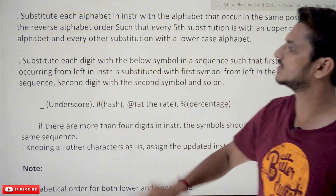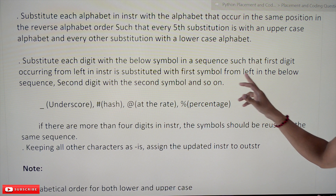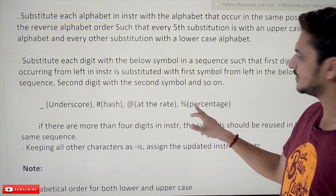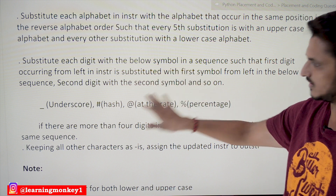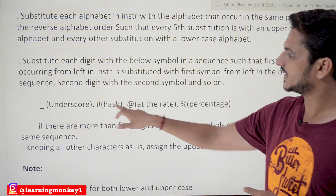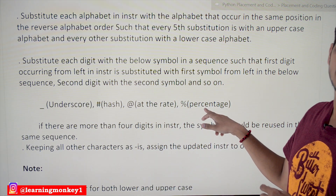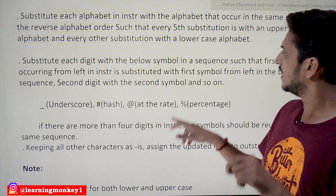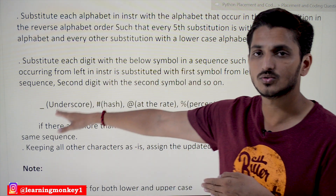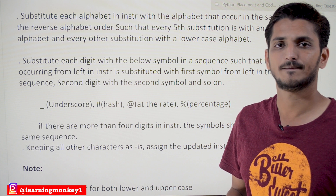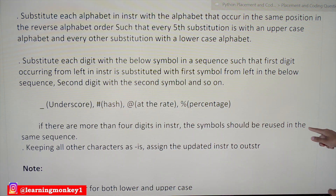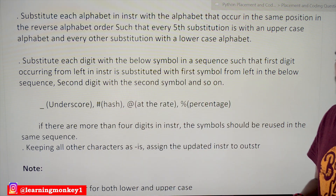There are also conditions on digits. Substitute each digit with the following symbols in sequence: the first digit with underscore, second digit with hash, third digit with at-the-rate, fourth digit with percentage. If there are more than four digits in the input string, the fifth digit is replaced with underscore again, the sixth with hash again — so the four symbols are reused in the same sequence repeatedly.